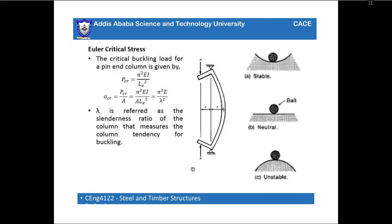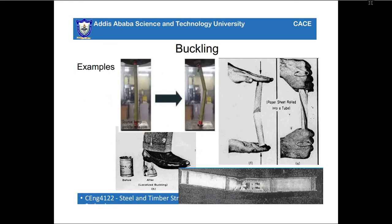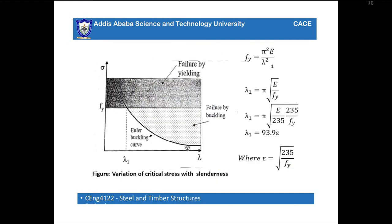The critical buckling load for the Euler column is calculated using the Euler buckling formula. We also need to look at the slenderness ratio of the column, which measures the column's tendency for buckling. The slenderness ratio and the critical stress are related, and we use these formulas to calculate the variation of critical stress with slenderness ratio.